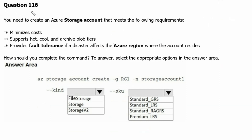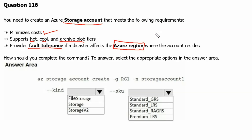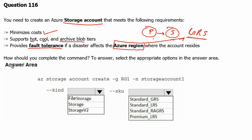Question 116. You need to create an Azure storage account that meets the following requirements: first, minimize cost; second, support hot, cool, and archive blob tiers; third, provide fault tolerance if a disaster affects the Azure region where the account resides. This means we need a primary region and a secondary region. If there is any problem with the primary region, the secondary region should be available. Therefore the redundancy requirement is GRS — Geo-Redundant Storage. How should you complete the command? Select the appropriate options in the answer area for 'kind' and 'SKU'.